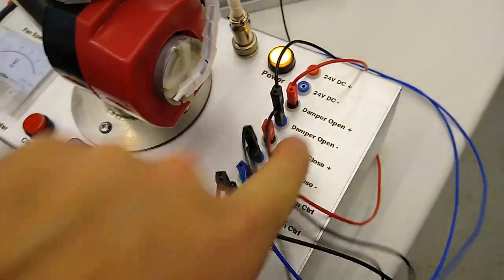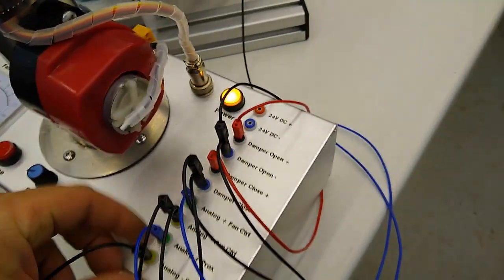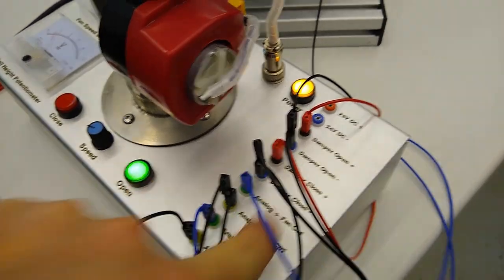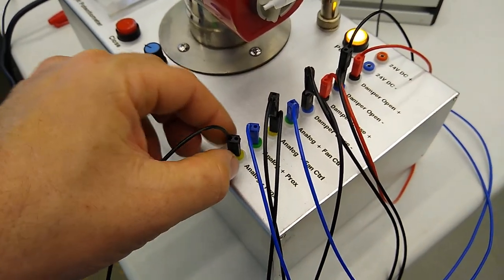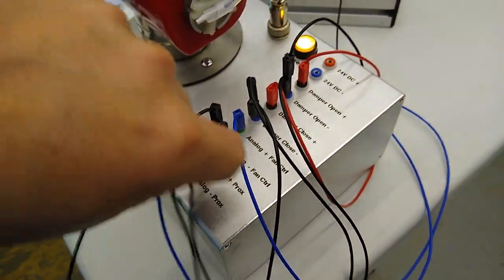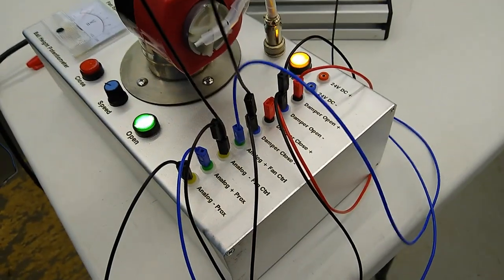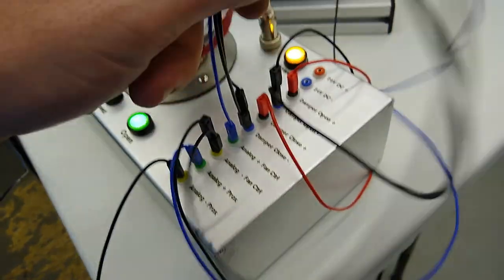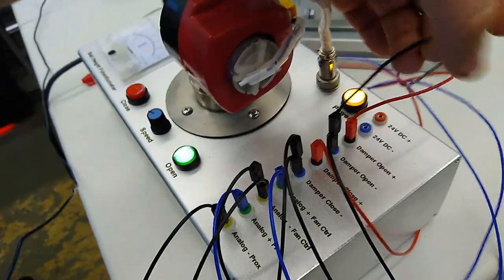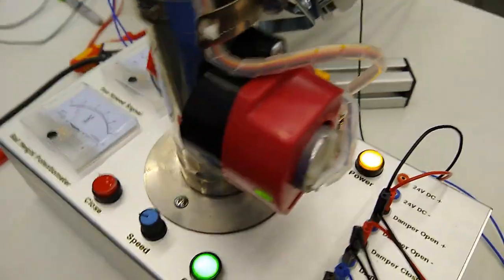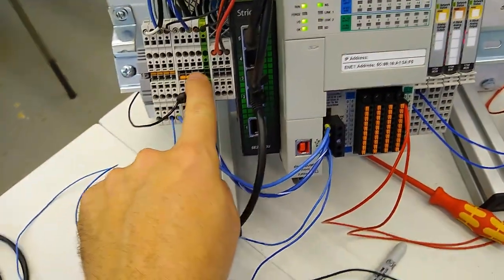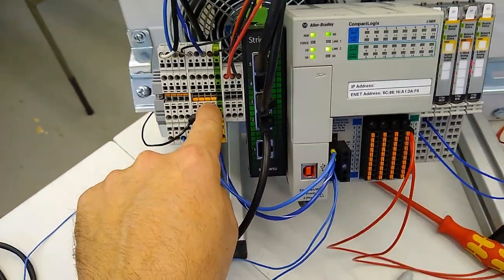So over here is all the wiring to it and really you jumper all of the minuses together. We have our analog prox minus jumpered to our analog fan control minus which is then jumpered to our damper close minus which is then jumpered to our damper open minus and then we have one single wire coming over to our right set of terminals which is our zero volt.